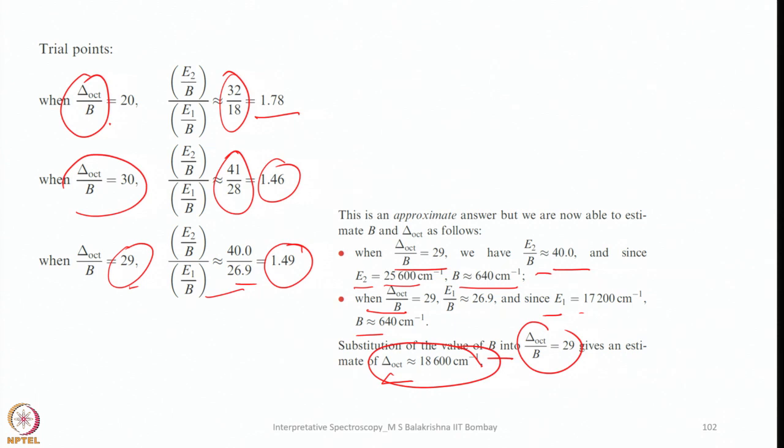This shows how useful Tanabe-Sugano diagrams are, from which by simply looking into the transition and comparing the value of E/B versus delta-o/B, you can calculate delta-o very easily for a given complex. Let me stop here and come with more examples maybe at the end. In my next lecture, I shall focus your attention on IR spectroscopy. After that, I will go to mass spectrometry, then EPR, and if time permits, Mössbauer. Then I would come back to solve problems from all these spectroscopic methods to make you very expert in elucidation and interpretation of the data. Until then, see you until my next lecture.